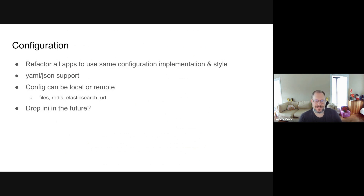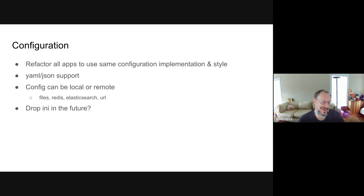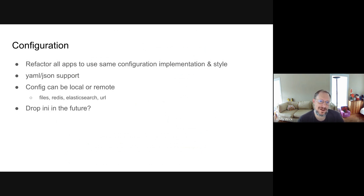At Archimede earlier this year, we talked about the configuration and how it's kind of confusing, and the code has been a jumbled mess. We've spent a lot of time making it just one way to configure all the tools and improving what that one way is, including you can now have configurations in YAML and JSON. Besides just INI files, we're also supporting YAML and JSON, and those config files can be more than just local — you can also store them in Redis, Elasticsearch, or just a URL. On startup, all of our tools now have the ability to go get the configuration files remotely.